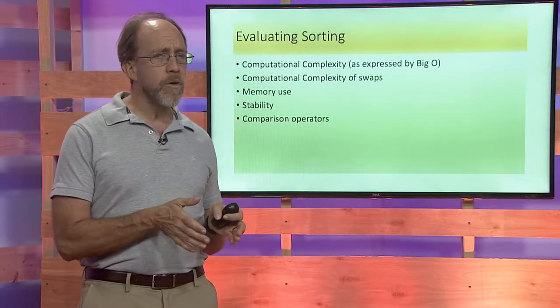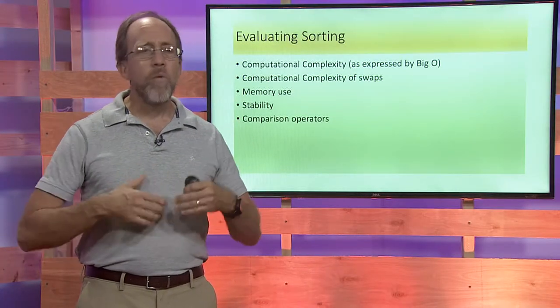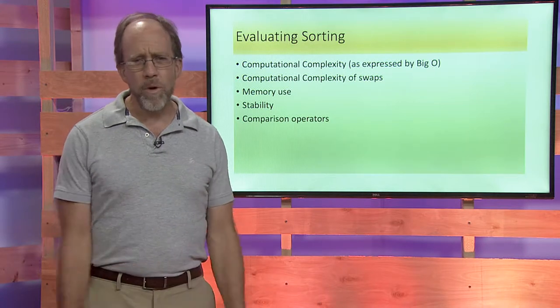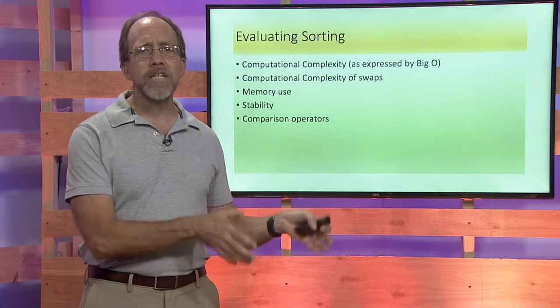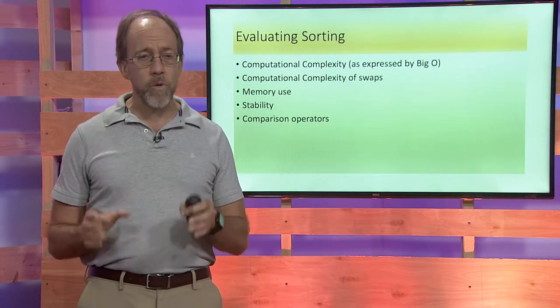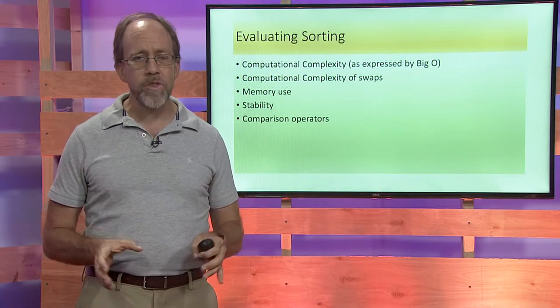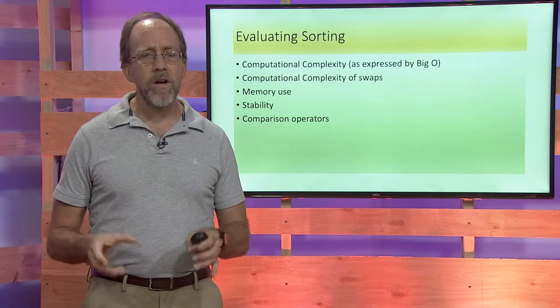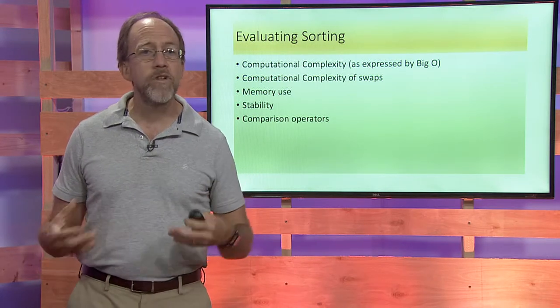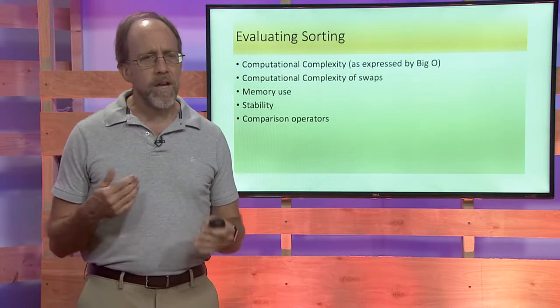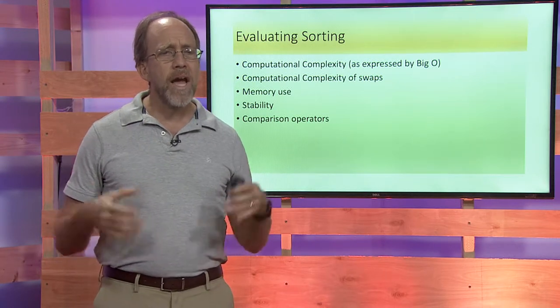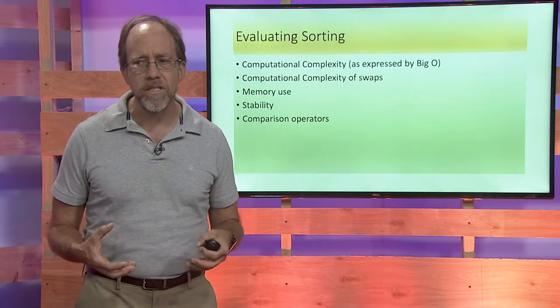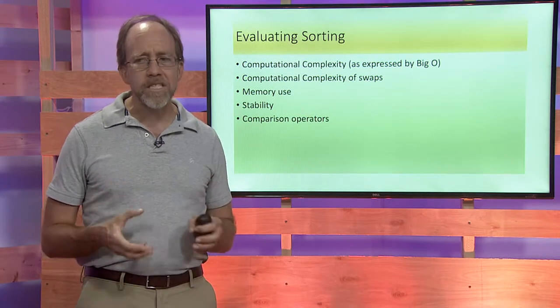Another one is memory use because some sorting algorithms are what we call in-place. We don't need extra memory to actually perform the sorting function. We can just do it with the memory that is right there associated with the array or whatever you're sorting already. Another one is the concept of stability. And then the last one being how do we actually get those comparisons and the swaps to actually be efficient.